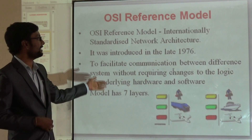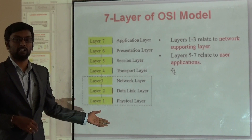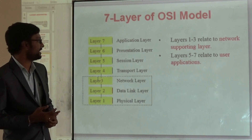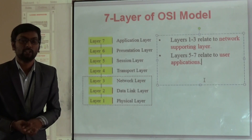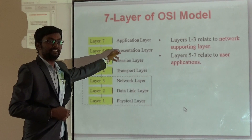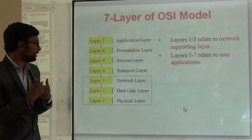Next, what are the layers available in this model? There are 7 layers. The first layer is the Physical layer, the second is the Data Link layer, the third is the Network layer, the fourth is the Transport layer, the fifth is the Session layer, the sixth is the Presentation layer, and the seventh is the Application layer. Usually, the first three layers are called network supporting layers, and layers 5, 6, and 7 are called user supporting layers.